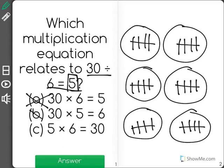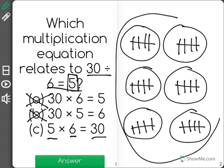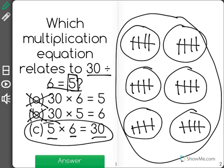and I don't have 30 groups of 5. But I do have 6 groups of 5 to equal a total of 30, meaning that C relates to 30 divided by 6 equals 5.